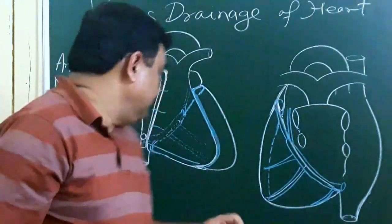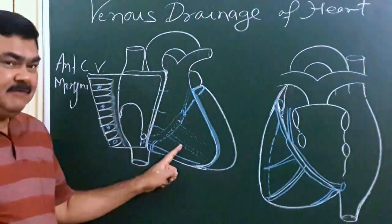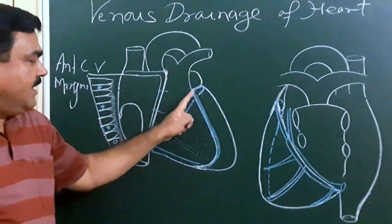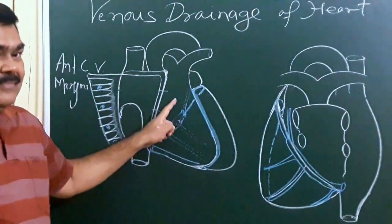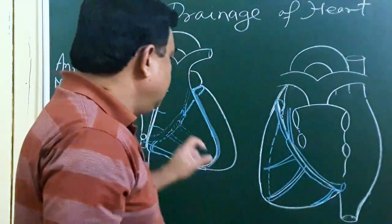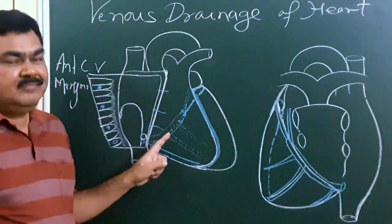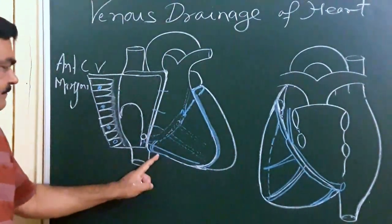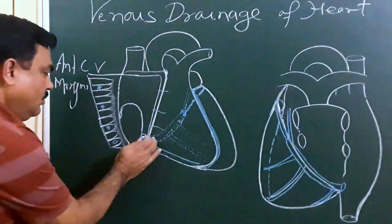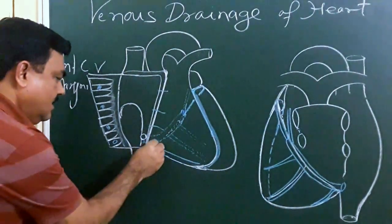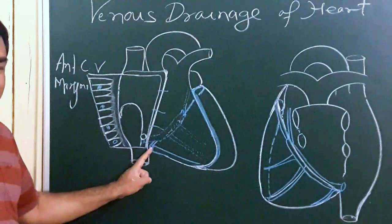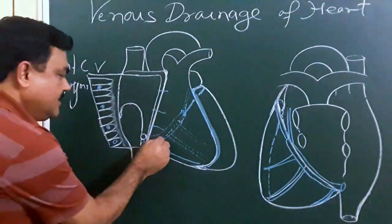So into the coronary sinus, five veins open: the small cardiac vein, the middle cardiac vein, the posterior vein of the left ventricle, the great cardiac vein, and the oblique vein of the left atrium. In addition to this, sometimes the marginal vein directly opens into the coronary sinus, or sometimes it initially opens into the small cardiac vein and through the small cardiac vein it opens into the coronary sinus.